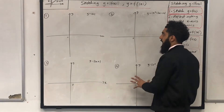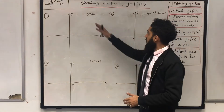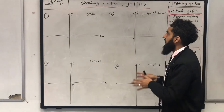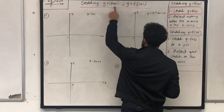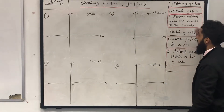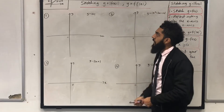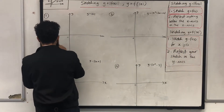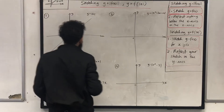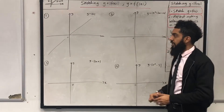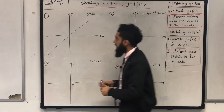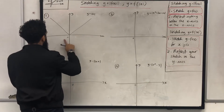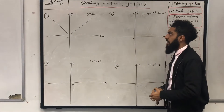I've got four coordinate grids and four different functions. For each of these functions, the modulus is outside the function, so we're sketching graphs of the form y equal to the modulus of f of x. For the first one, I want to sketch y equal to the modulus of x. I'll first sketch y equal x, then reflect anything below the x-axis in the x-axis. That is the graph of y equal to the modulus of x.